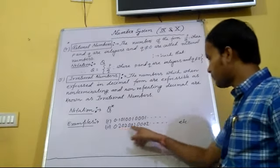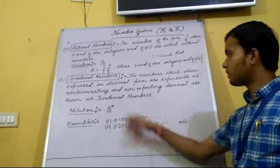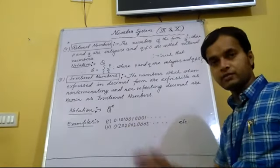Second example is also a non-terminating number and this is also not repeating. That's why this is also an irrational number. Thank you!